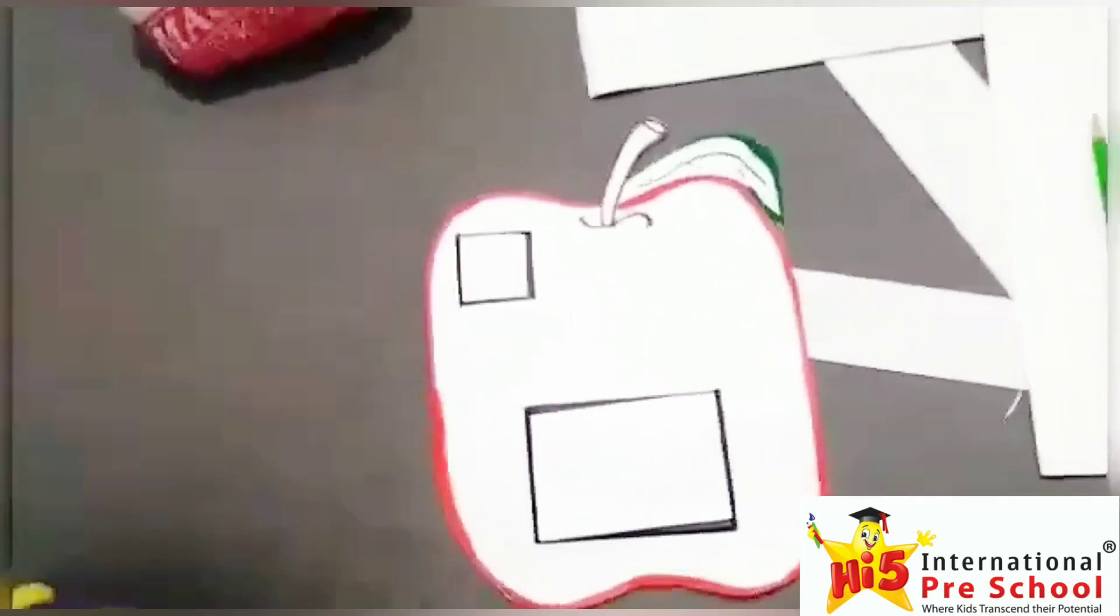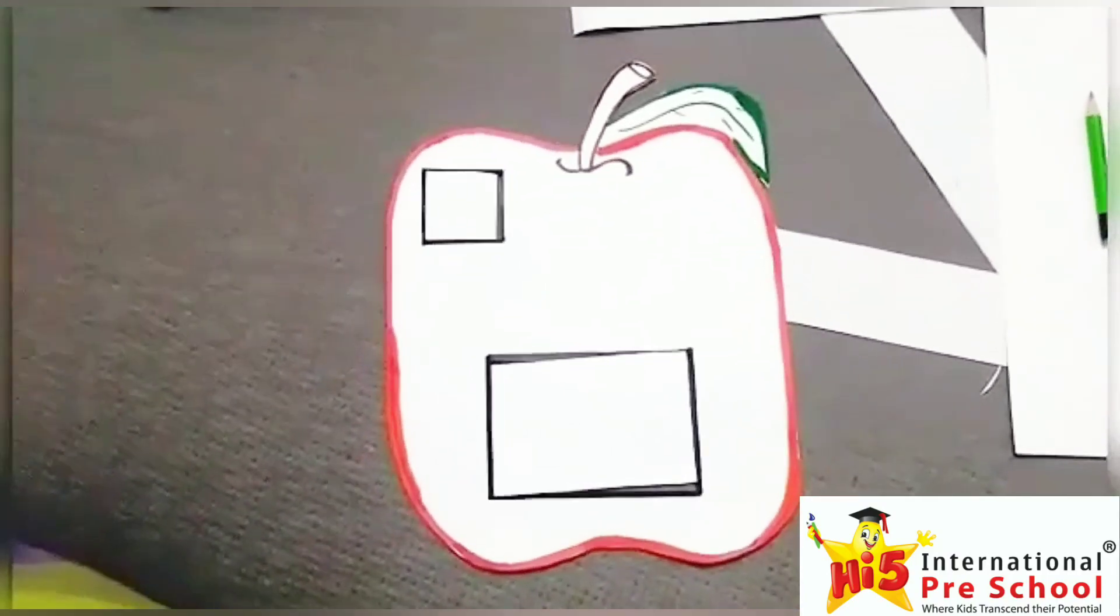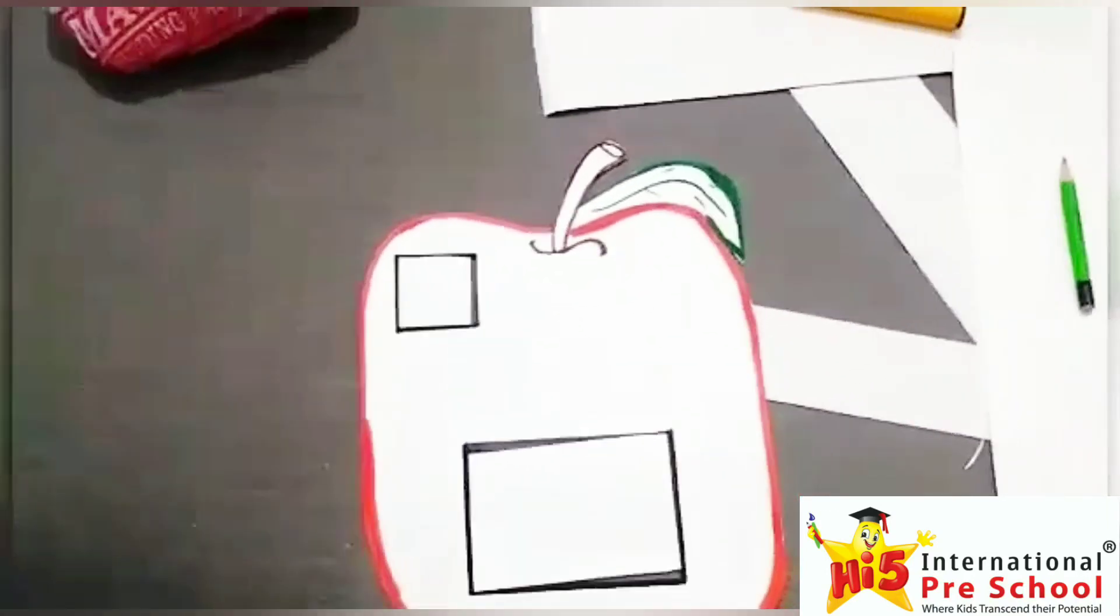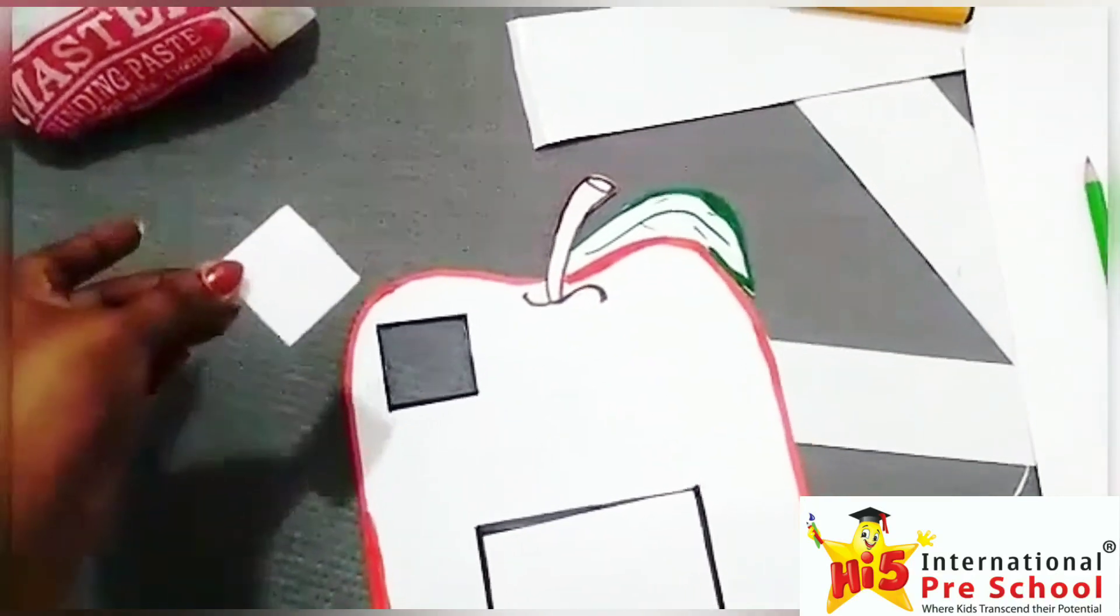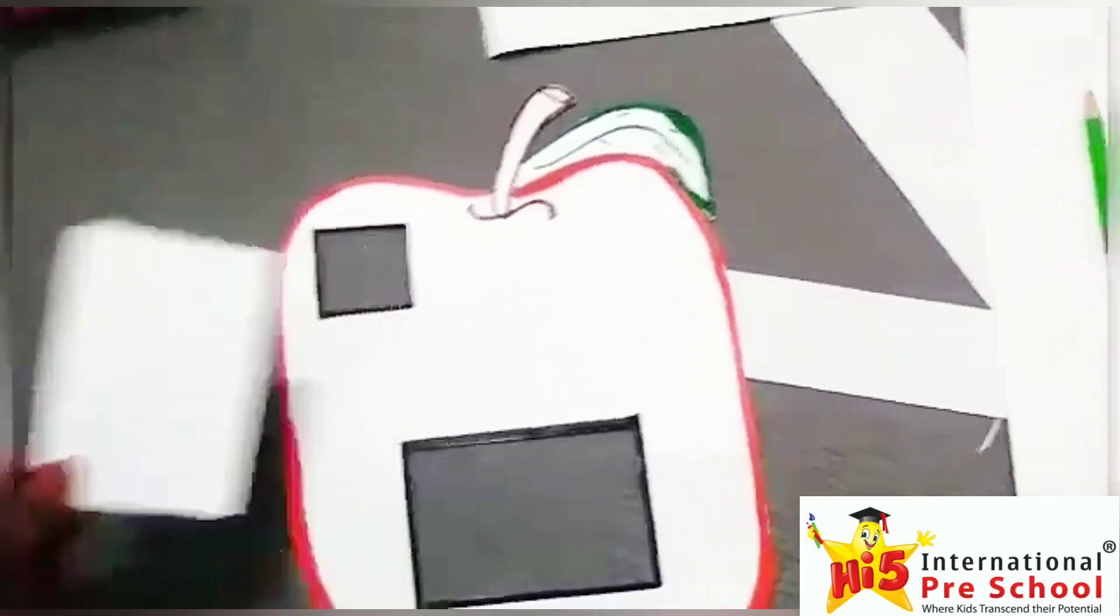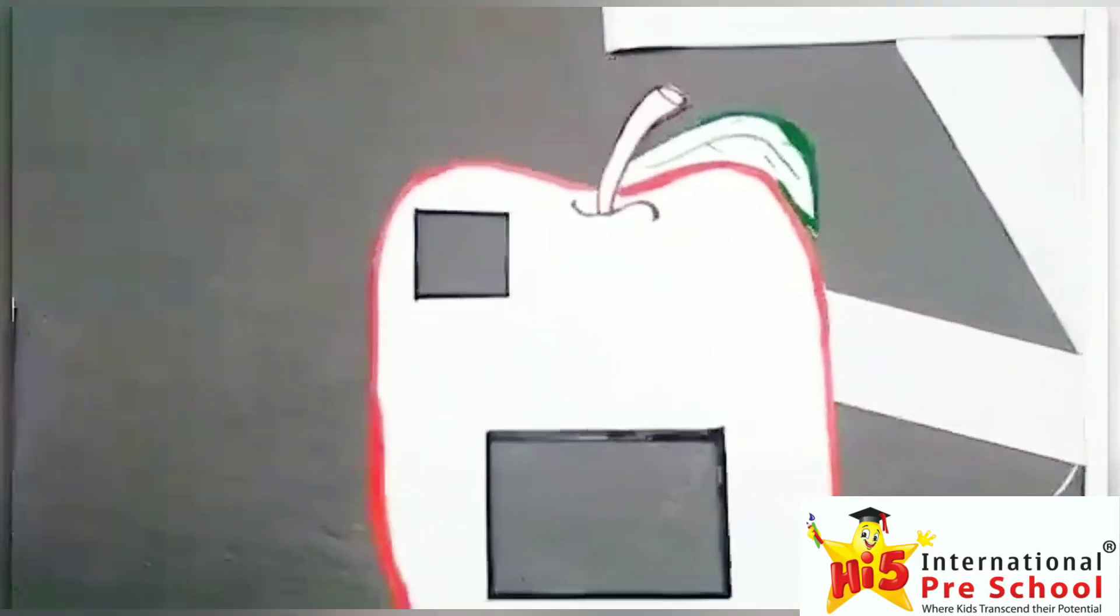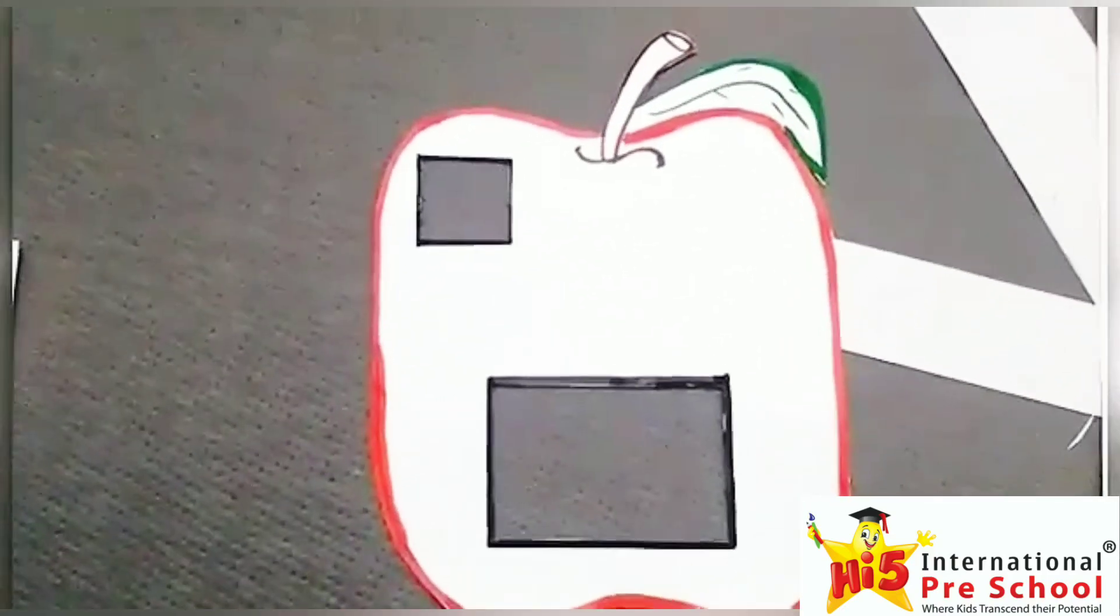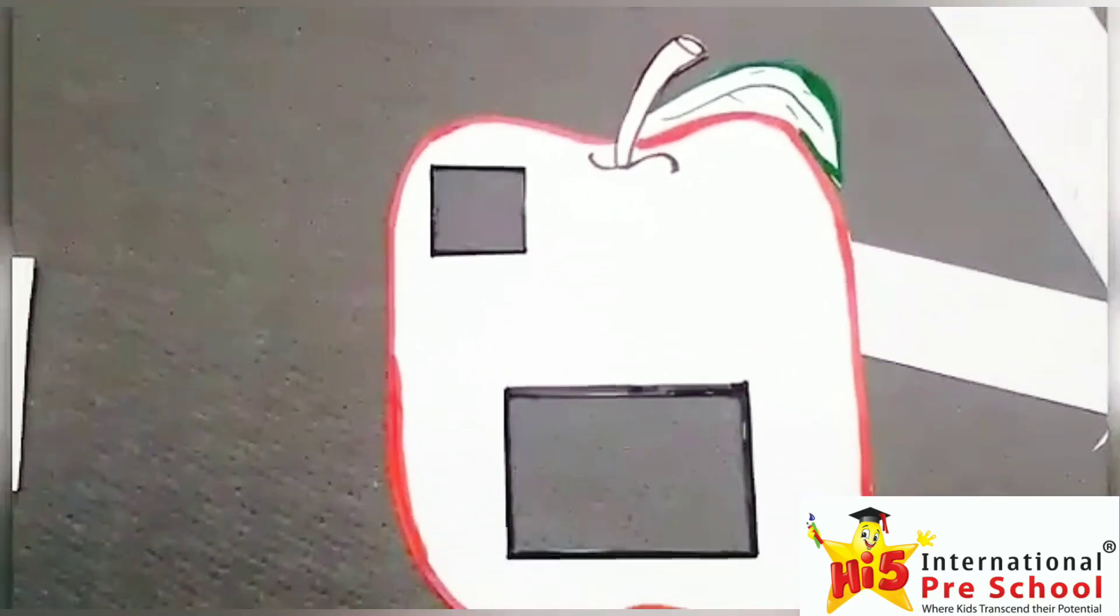Now, you can outline the apple with bold markers like this. I have used the red marker, green and brown and black markers for this. Now, cut off the squares and the rectangle with the help of your parents using the scissors or knife and this is how it looks after cutting the two portions.